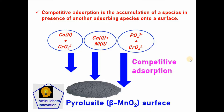Competitive adsorption is the accumulation of a species in presence of another adsorbing species onto a surface. Here, I have shown a typical example of competitive adsorption of cobalt in presence of hexavalent chromium onto barnesite, which is beta manganese dioxide, and cobalt plus nickel system.